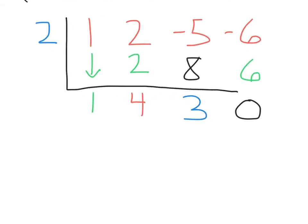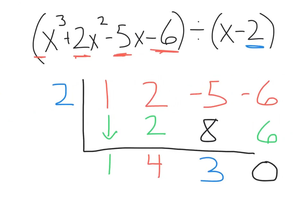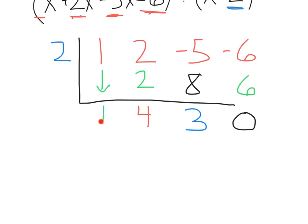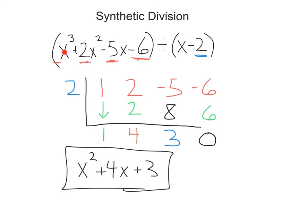Here's what we do with these numbers. When we divide this polynomial — with all its coefficients — by the x minus two we were working with, these are going to be our new coefficients of our answer. So our answer is one x squared plus four x plus three. Since we have a zero here, that means there is no remainder. Also notice this is always one degree less — we started with x cubed, now we've got x squared.